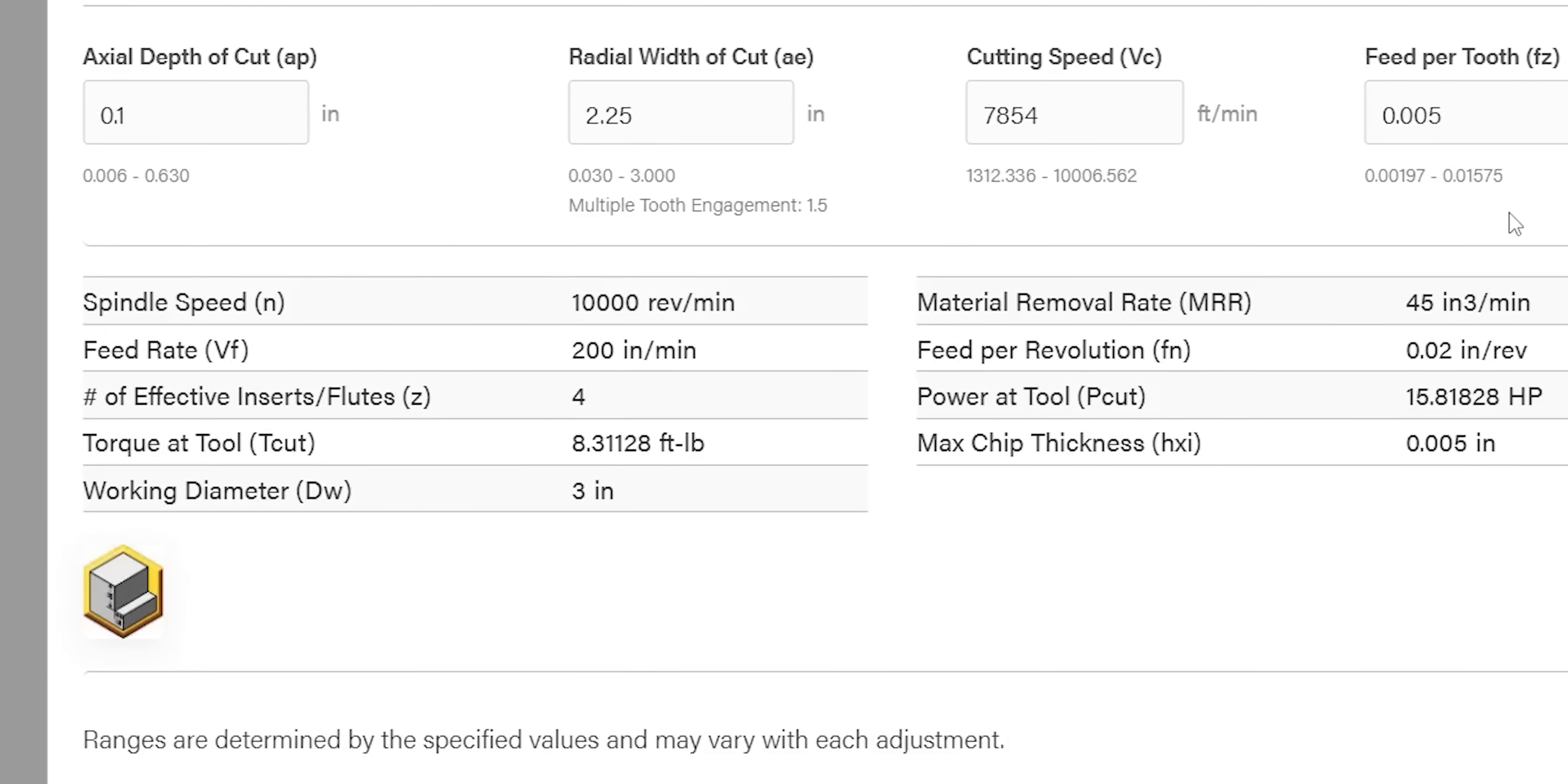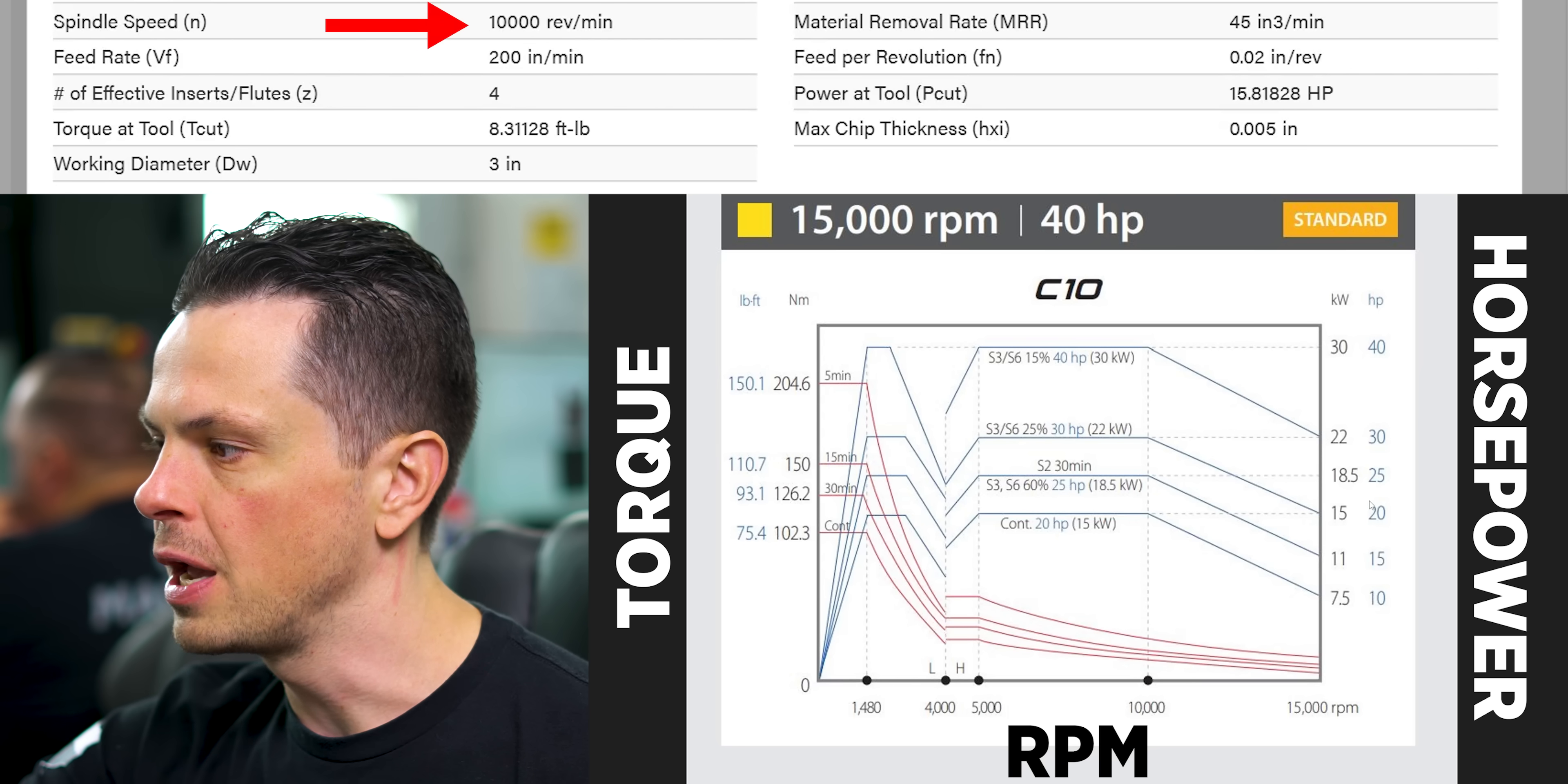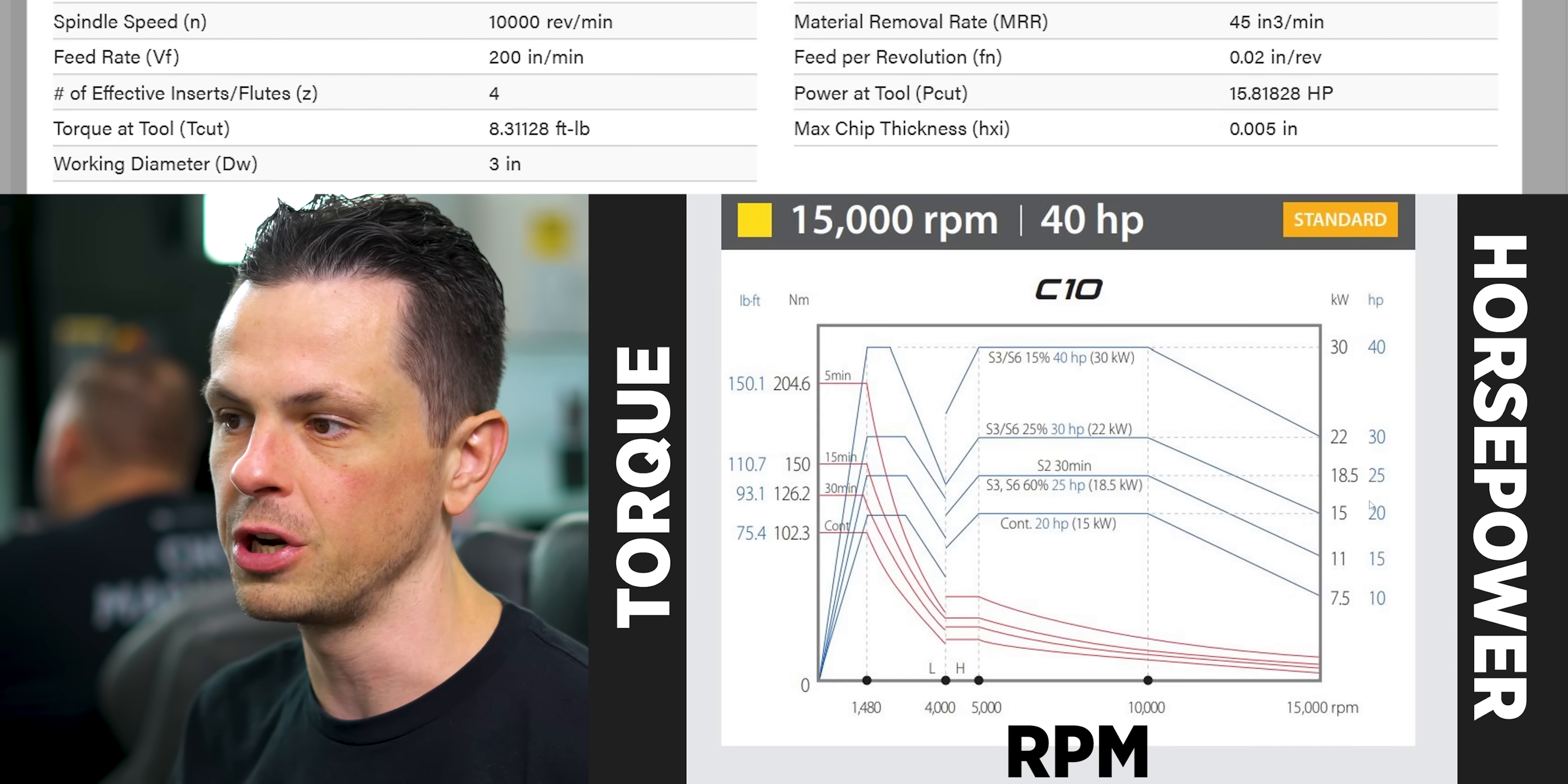To run at 200 inches a minute at this axial depth of cut and radial width, we need 8.3 foot pounds of torque and 15.8 horsepower. So I pulled up our chart and our feeds and speeds calculator side by side. We can see clearly here that at 10,000 RPMs, we have a lot more than 8.3 foot pounds of torque. For horsepower, we can see that we can run at 20 horsepower continuously. So we're well within the range there. 200 inches a minute is not even coming close to pushing the machine to what it's capable of.